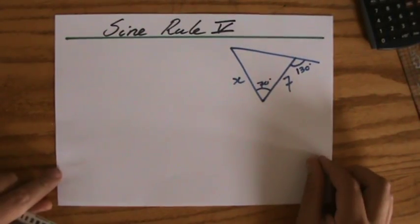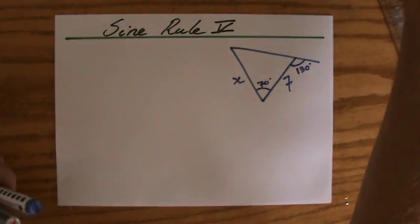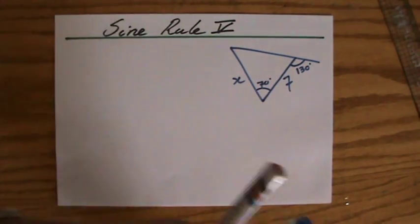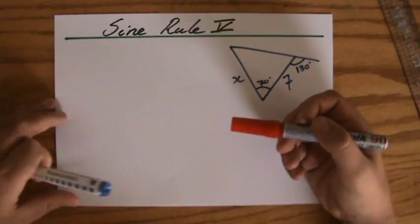So I decided to do one more example, a question involving the sine rule. Now let's have a look at this situation. I have to find the length of X and it's not a right angle triangle.